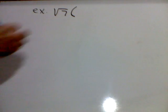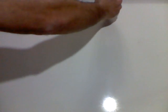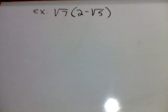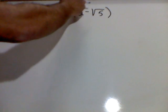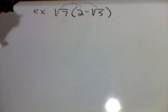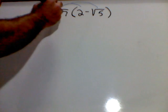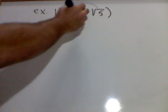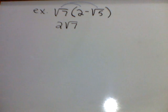First example, square root of 7 times 2 minus square root of 5. In this problem, I have to distribute the square root of 7 through to both terms inside the parentheses. Square root of 7 times 2 is 2 square root of 7's.